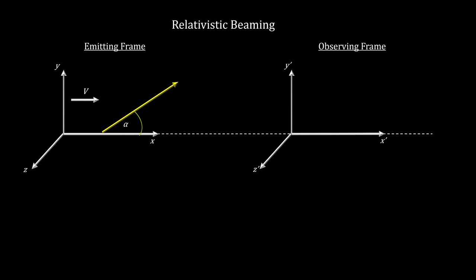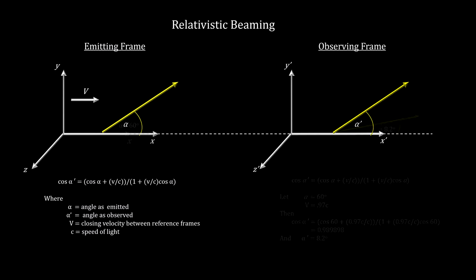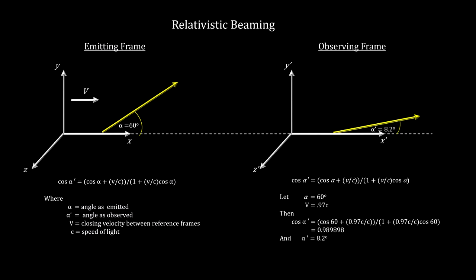A particle emits a photon at an angle alpha from the line of motion. The angle measured in the frame on the right can be computed using the Lorentz transformation. Using M87C1's velocity as the velocity and 60 degrees as a sample angle, we see that the observed angle, alpha prime, is considerably smaller at only 8.2 degrees.